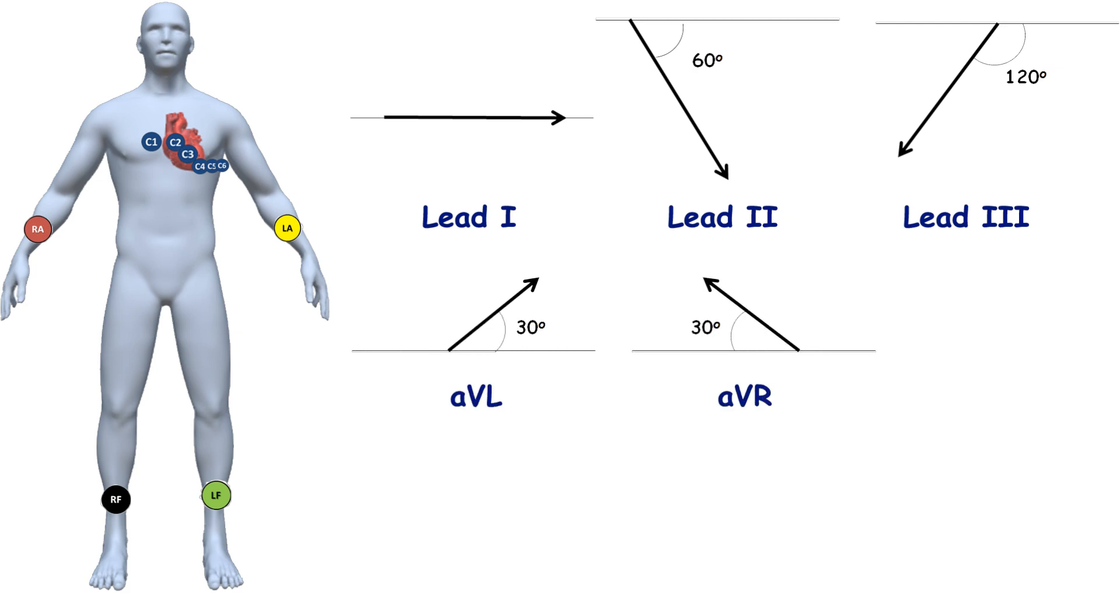Leads AVL and AVR are represented as vectors that are 30 degrees up from the horizontal line. Lead AVF anatomically isn't straight down, but it's really close and it is represented as the vector directed straight down.